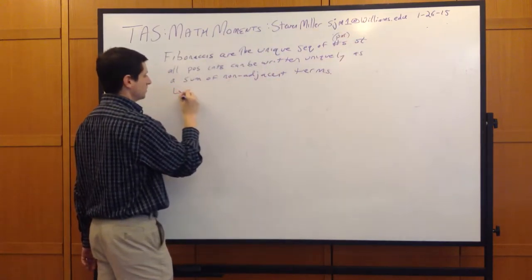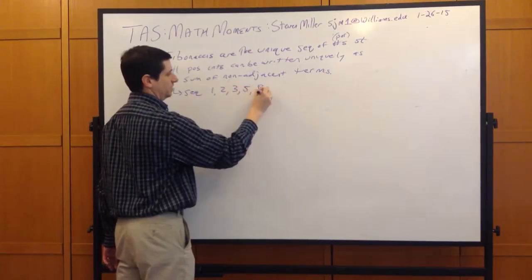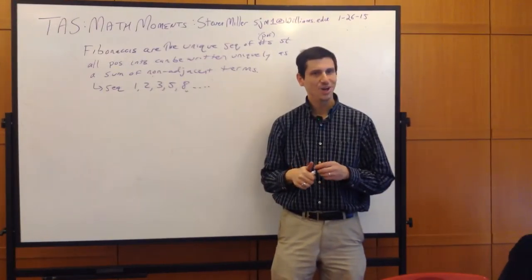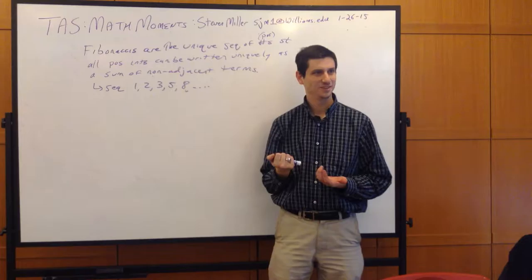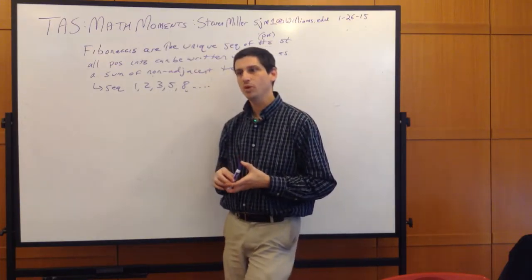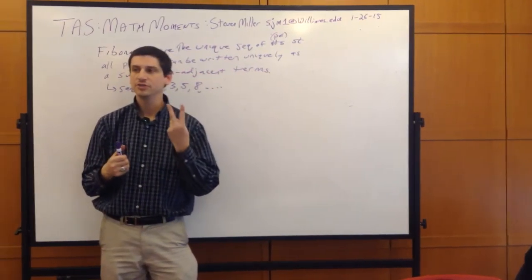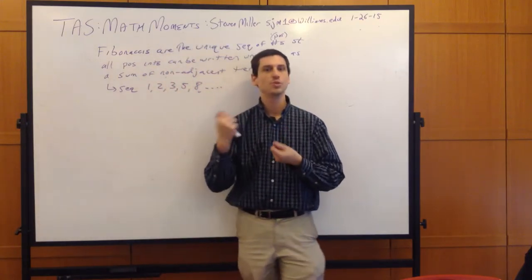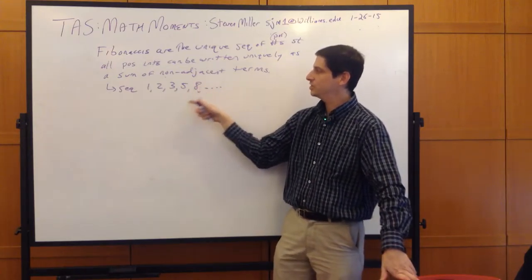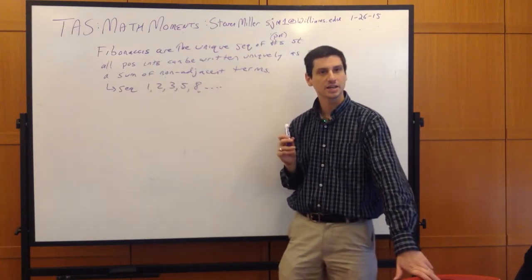With the sequence 1, 2, 3, 5, 8, we can begin to see why we defined the Fibonacci numbers this way. Having a 0 causes problems: we lose uniqueness because we can just tack on a 0. Having two 1s also creates uniqueness problems — which one do I use? For example, with the number 9, I could use this 8 or the previous 8. To have a unique decomposition, we need to write it without repetition.